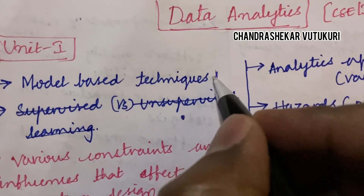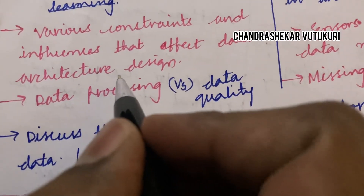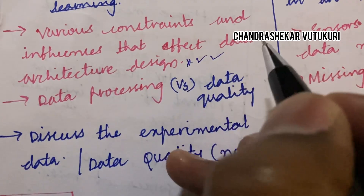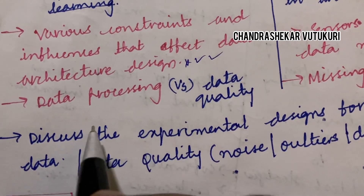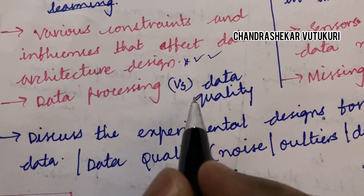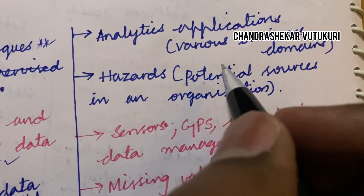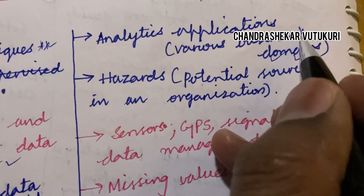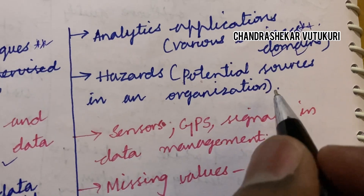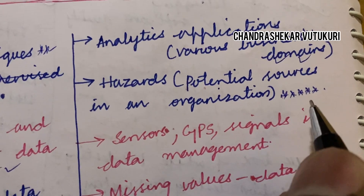The first important question is model-based techniques — that is said to be a very important question. The various constraints and influences that affect data architecture design is also said to be a very important question. Define the terms data processing and data quality, as well as the differences — that may be a short or long question. Analytics applications in various business domains is also a top most question. Hazards and potential sources in an organization is very important and can be expected as question 2A, 2B, or 3A, 3B.